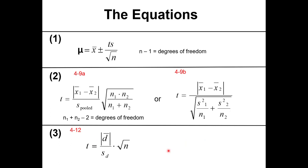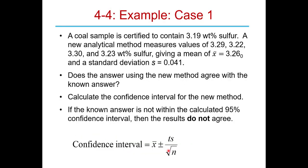These equations look complicated and a bit abstract right now, but we'll go through examples to see how they work. For the Case 1 t-test example, we have a coal sample certified to contain 3.19 weight percent sulfur. Using a new analytical method, we get measured values of 3.29, 3.22, and so on, giving a mean of 3.26 and a standard deviation of 0.041.